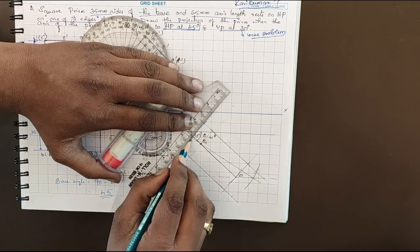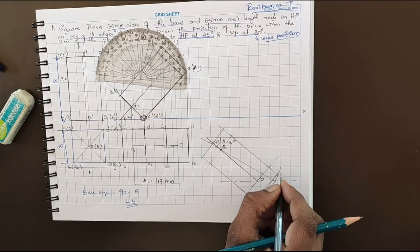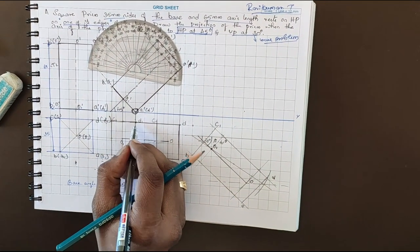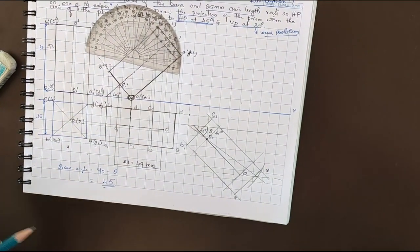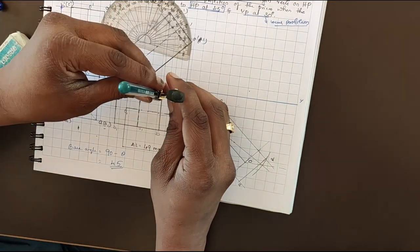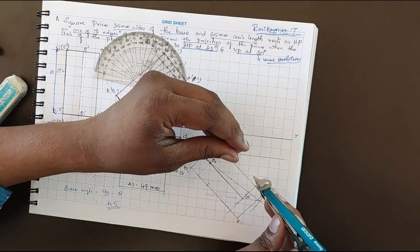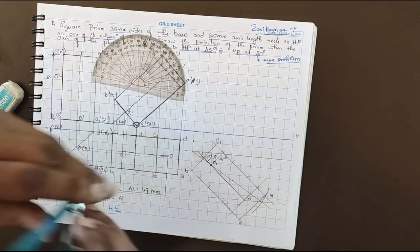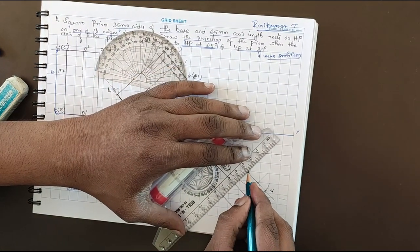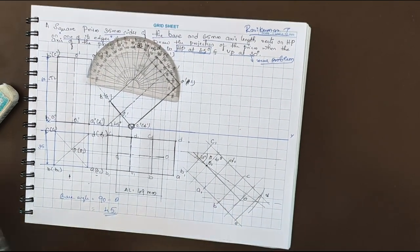Draw one box, then another box. This point is a, this point is d, this is c, and this is b. Here are b1 and c1 — this is the top. Now identify d1 and a1. From here to here, the same distance — cut from here to here, and again from here to here. Draw thin lines first, then thick lines. This point is d1, this is a1, and this is c.